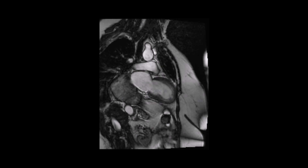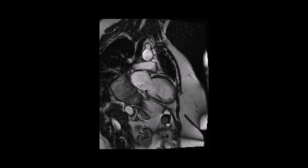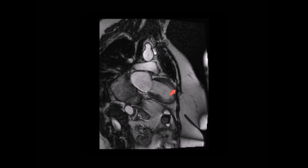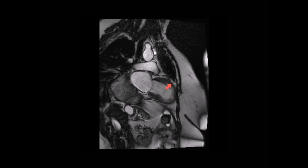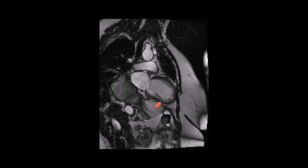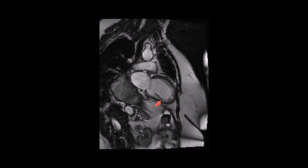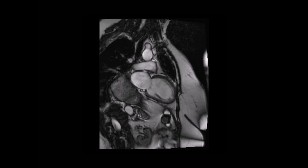Here's a two-chamber cine CMR image showing the left ventricle, mitral valve and left atrium. Again, we can see a degree of ballooning and marked regional wall motion abnormality of the apex in this patient with Takotsubo cardiomyopathy.